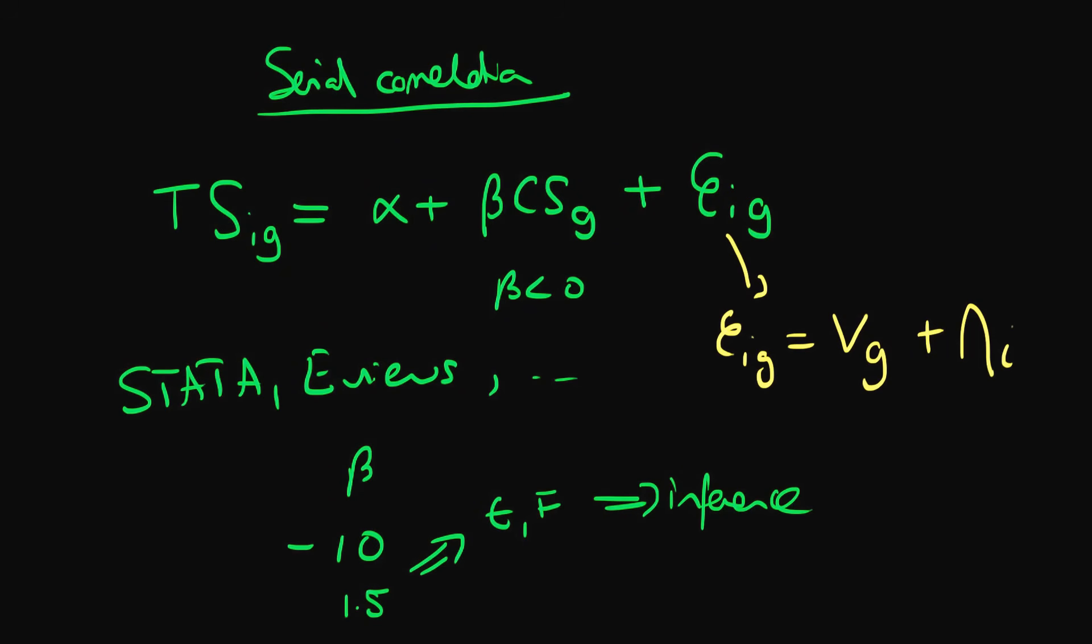What's the problem with doing this if we just apply general models in Stata or eViews? In coming up with an estimate of the standard error in beta, Stata and eViews assume that the Gauss-Markov assumptions are true. Specifically, they assume in coming up with this estimate of 1.5 that there is no serial correlation.